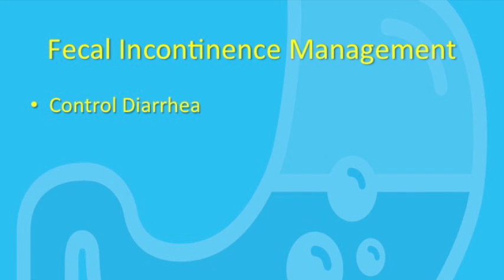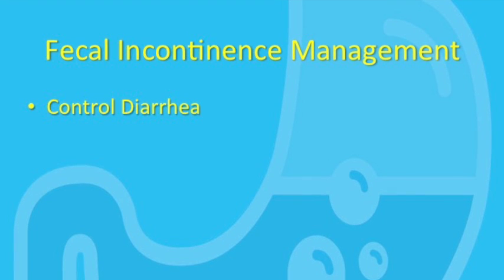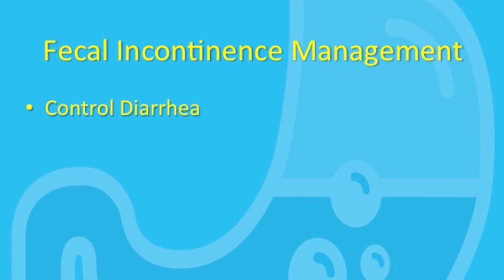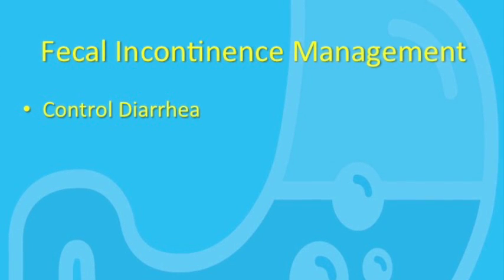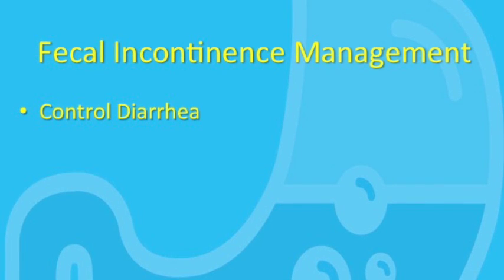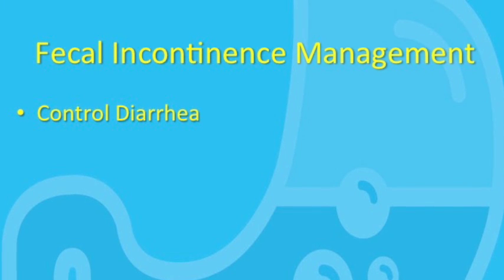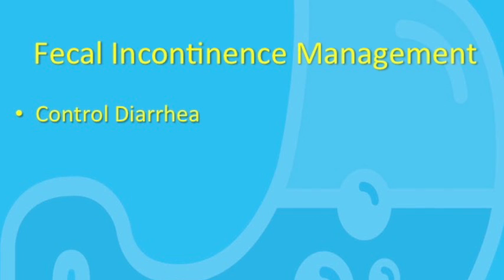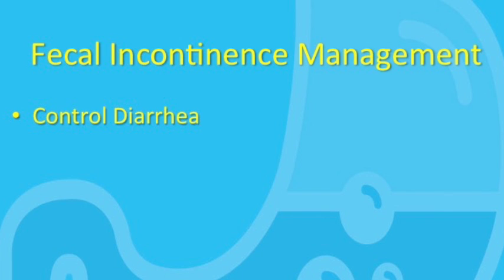How can we help people where one or more of these continence mechanisms do not work and they leak stool involuntarily? Regardless of the underlying cause for patients' fecal incontinence, the most important first step is to make sure that stool consistency is appropriate. Anybody can become incontinent if their stool is loose enough or they have bad enough diarrhea. Having stool that is nice and formed and bulky can help with rectal sensation as well. For patients who present with fecal incontinence, I almost always start them on some fiber supplementation. The fiber will soak up fluid in the bowel and also bulk up the stool.